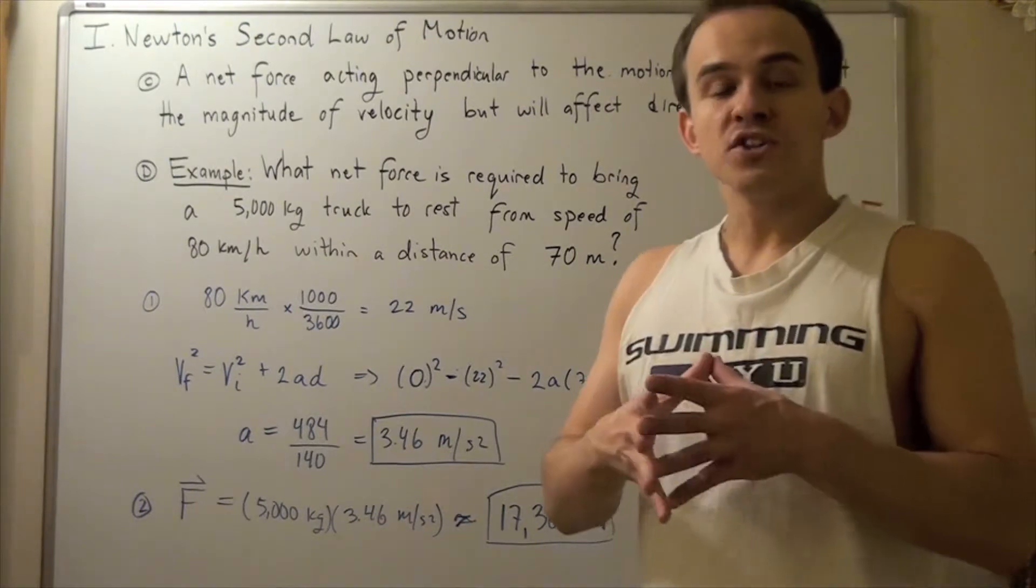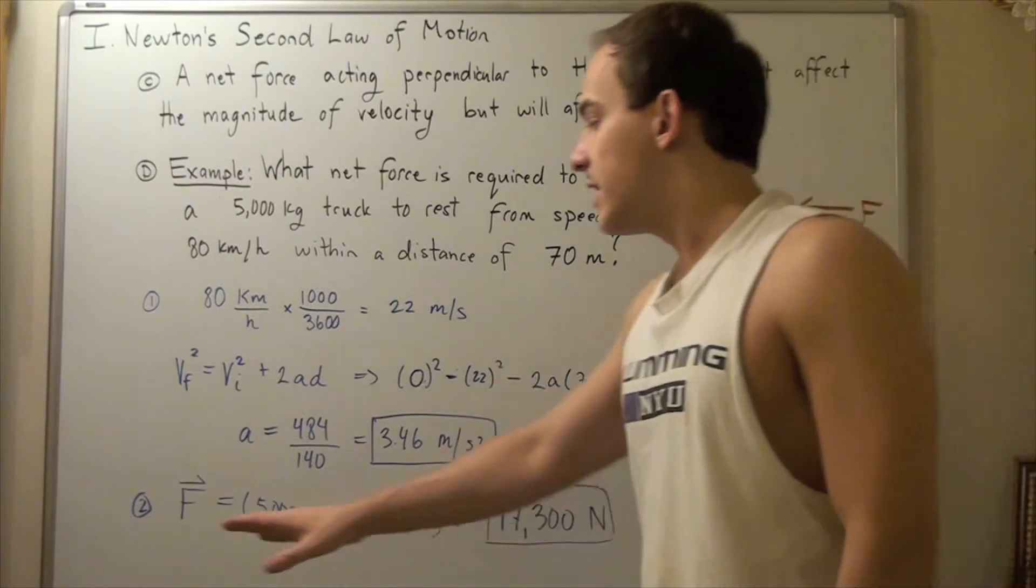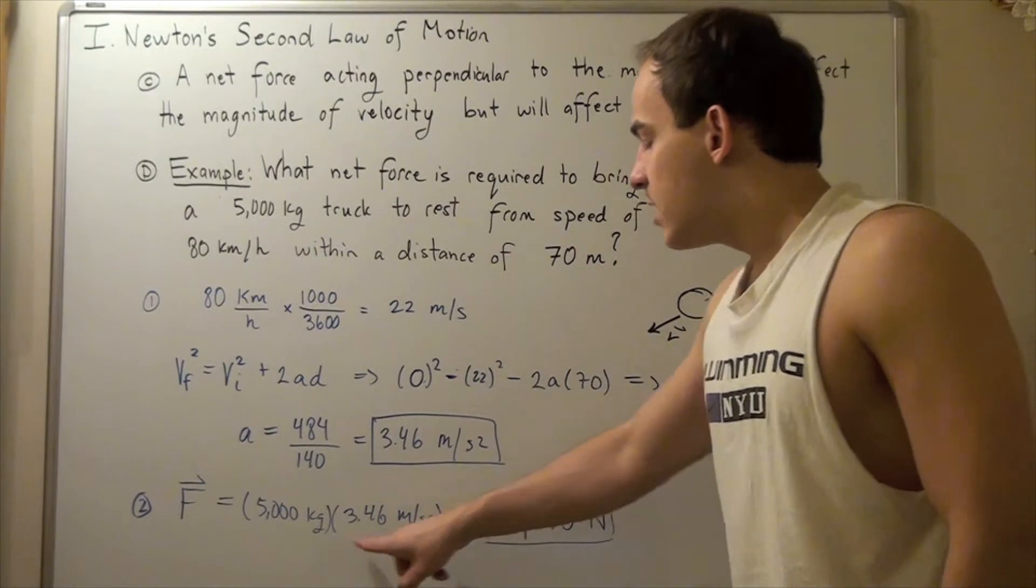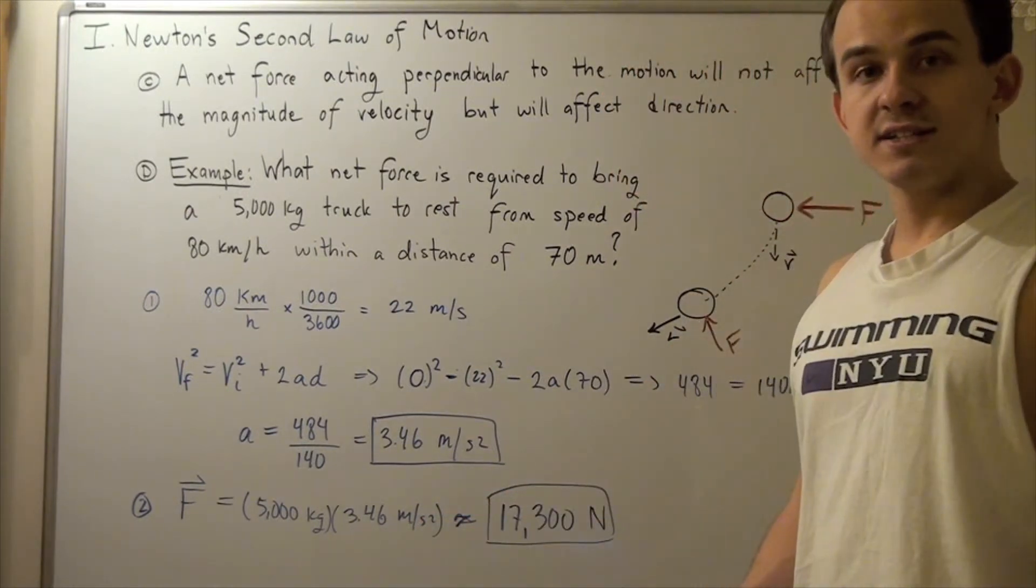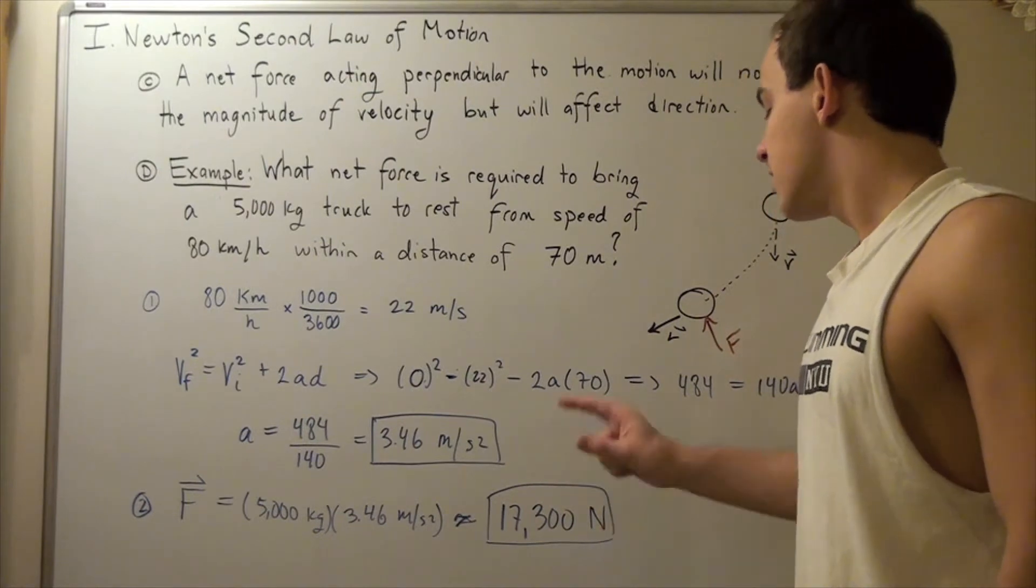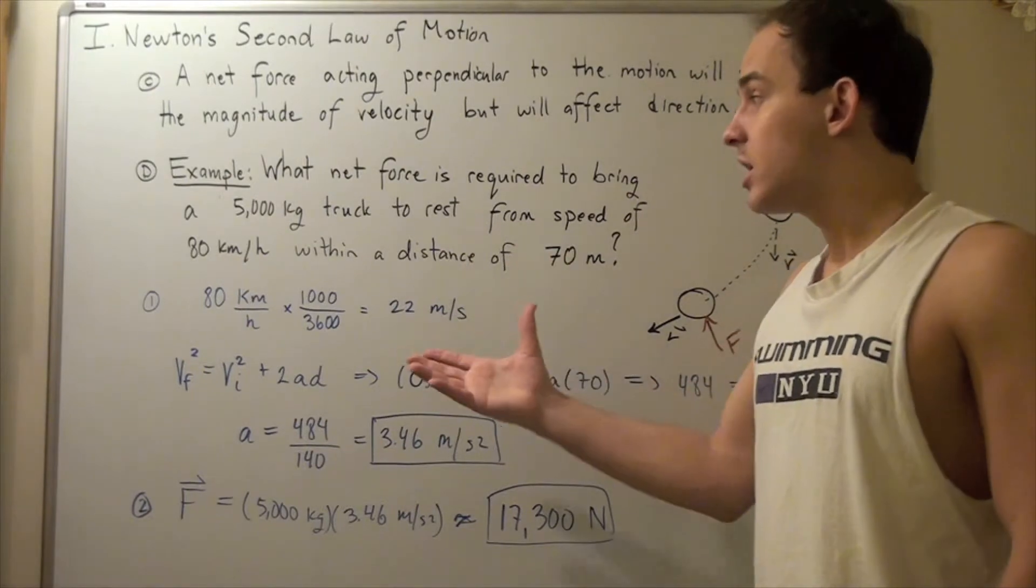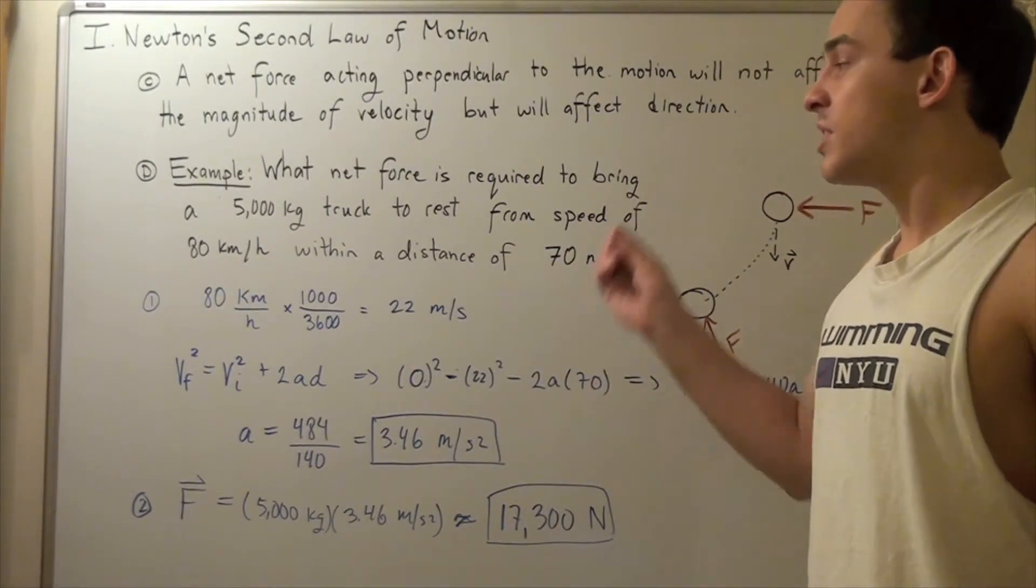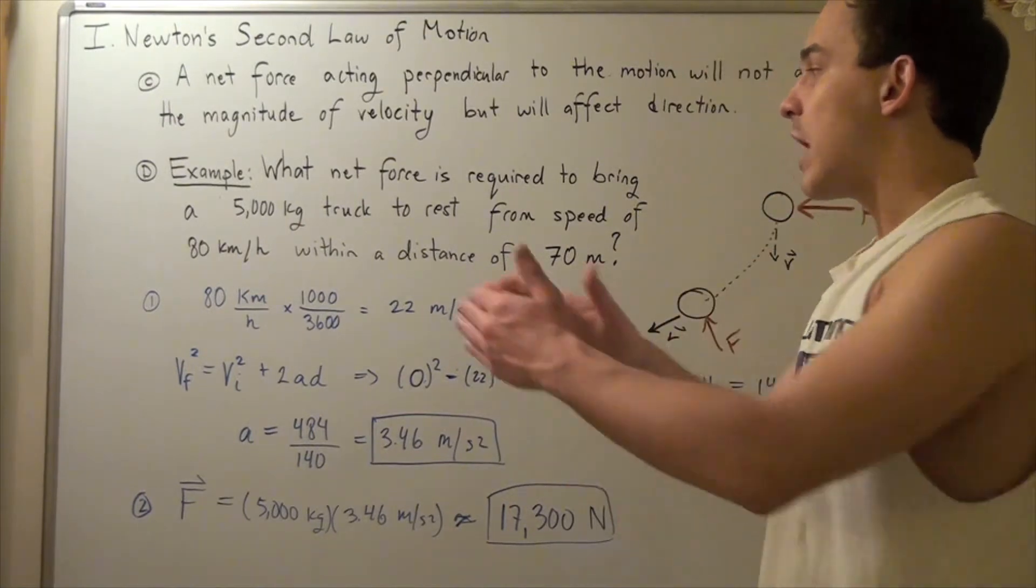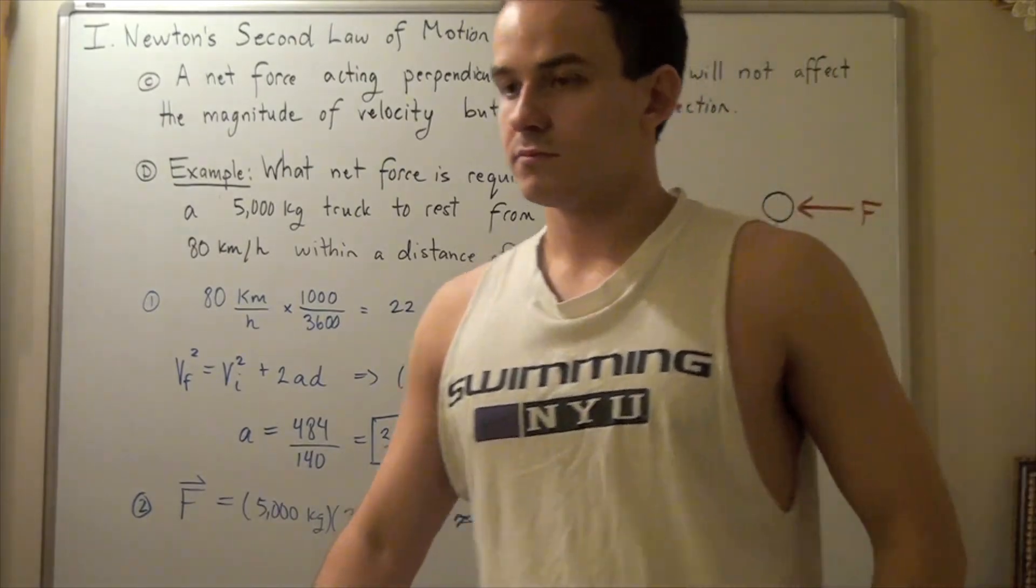So, to find the force required, I have to use the following formula, F equals MA. So, I plug in 5,000 kgs, and I plug in 3.46 meters per second squared, and I get approximately 17,300 newtons. So, this is the force that's required to stop my truck when my truck is traveling with initial velocity or speed of 80 kilometers an hour, and it travels or it stops throughout a distance of 70 meters.